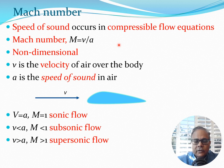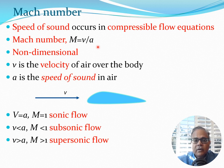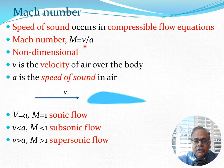The speed of sound will appear in many compressible flow equations, and in many cases we turn it into the Mach number. The Mach number is essentially velocity divided by a, where velocity is the velocity of air over the body or the velocity with which the body is going through the air. M = v/a is clearly a non-dimensional quantity because v and a are both in meters per second.